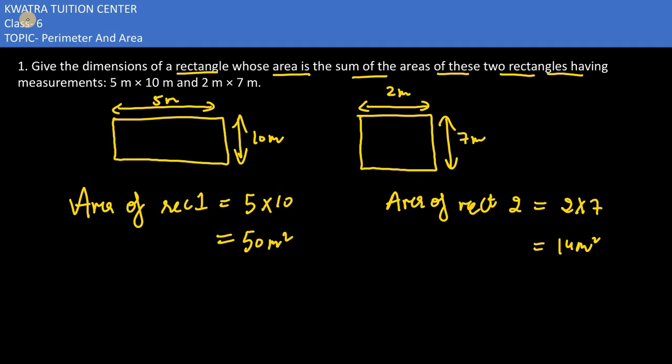Now add up these two so that you can get the sum of the areas. So what would be the sum of the areas in this case? It would be 50 plus 14. This is 64 meter square.